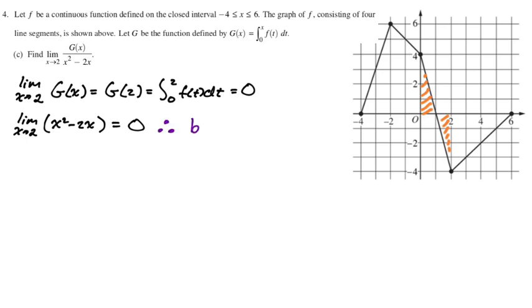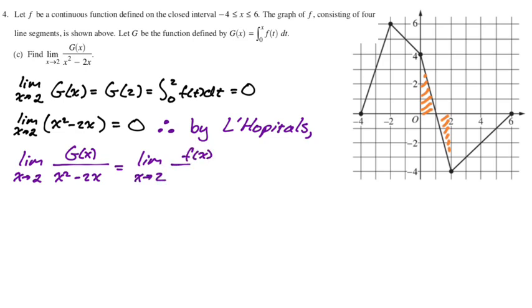So therefore, by L'Hopital's rule. What I'm going to do, because I'm never 100% sure on what my work should look like, is I write the original and say that it is equal to, and we're applying L'Hopital's, so it's going to be the derivative of the top, which is the derivative of g(x) is f(x), so the limit as x approaches 2 of derivative of the top is f(x). The derivative of the bottom is 2x minus 2.